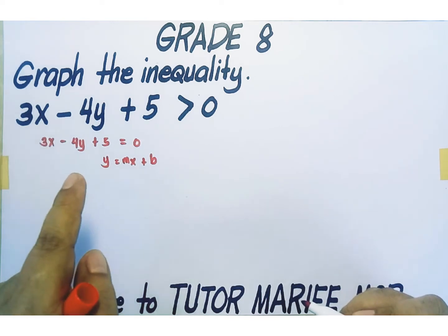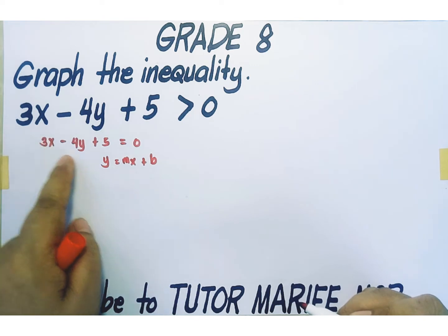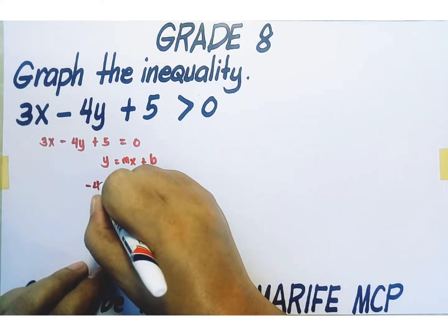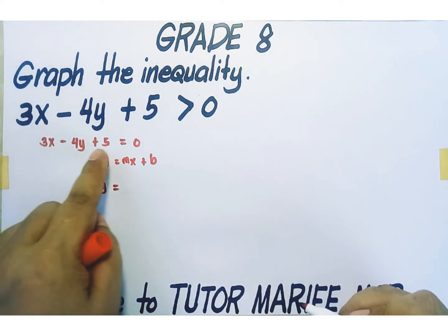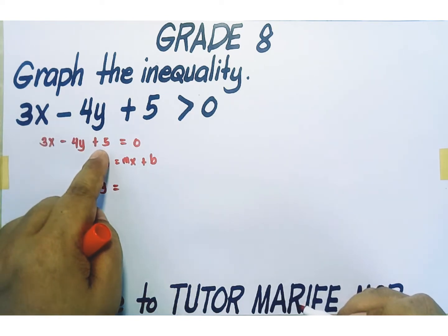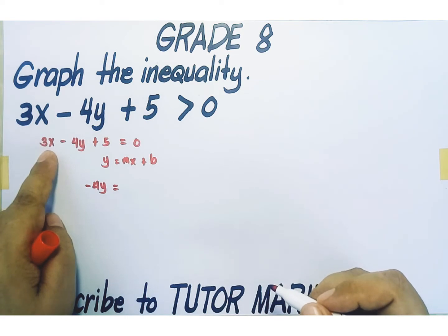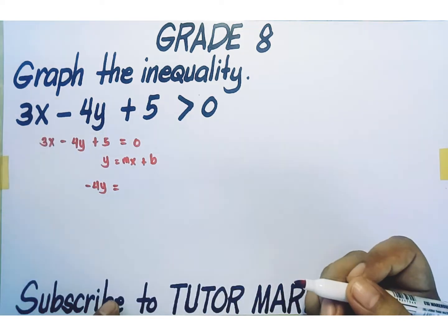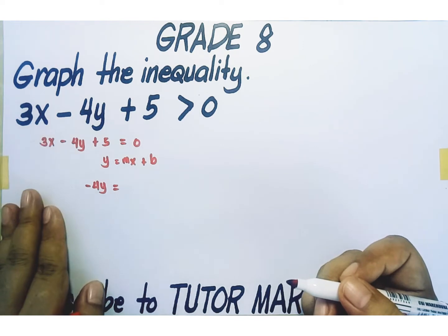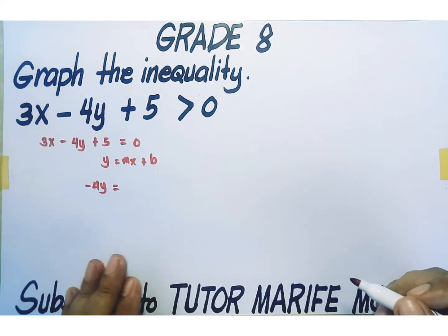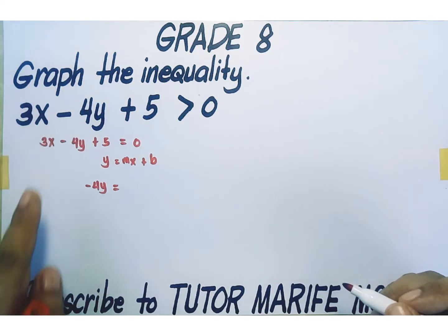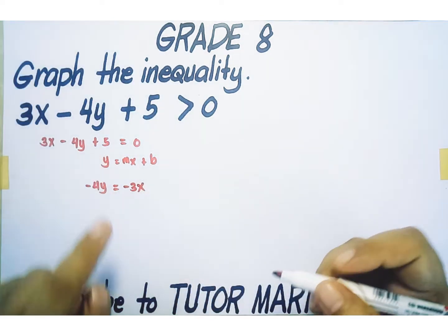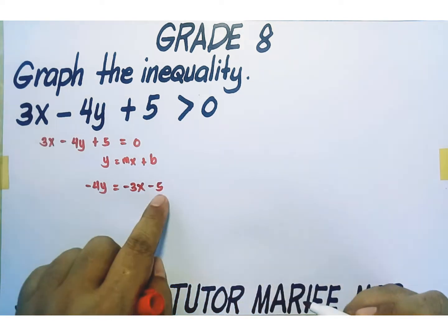In the slope-intercept form of a linear equation, the left side contains just y. That means I am going to keep the term that contains y on the left side of the equation, and transpose all terms not containing y to the other side. I will transpose 3x to the right, and also transpose 5 to the right. When you transpose a term, always remember the corresponding change of sign. 3x becomes negative 3x, and 5 becomes negative 5 when transposed to the right side.